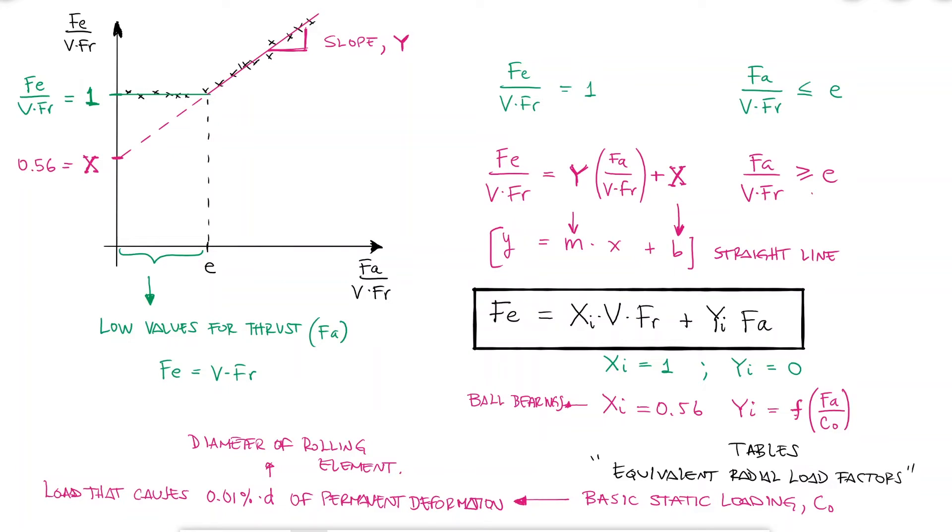Of course, you'd still take the V equals 1.2 into account if the outer ring is the one rotating, but in general the statement is the same. Small thrust loads can be negligible. When are they negligible? When the FA over VFR value is lower than E.